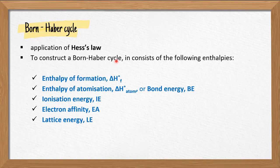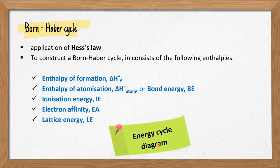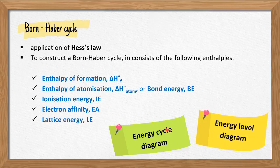For this Born-Haber cycle, you have two methods to show the diagram. First, we have the energy cycle diagram, where you will show a cycle. And the next one, we have the energy level diagram, in which we construct the Born-Haber cycle using energy levels.